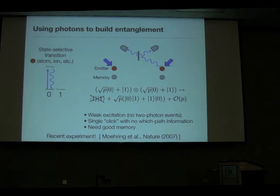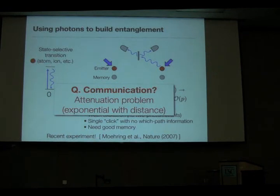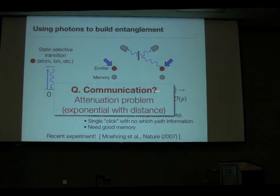This is really the task of quantum communication. But in quantum communication we also have the photon loss problem. As the distance between emitters gets larger, the probability that the photon travels down the whole path to the beam splitter is exponentially decreasing due to attenuation in optical fibers. Thus this communication task can succeed, but it doesn't scale well — it's exponential with the distance.